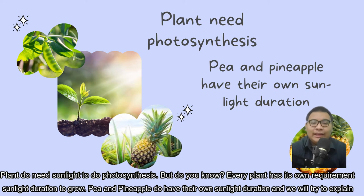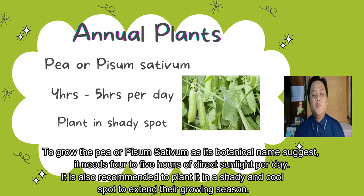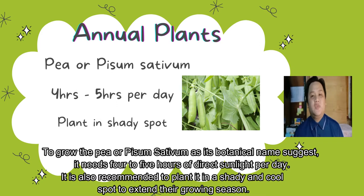Plants do need sunlight to do photosynthesis. But do you know, every plant has its own sunlight duration requirement to grow. Pea and pineapple do have their own sunlight duration and we will try to explain. To grow peas, or Pisum sativum as the botanical name suggests, it needs four to five hours of direct sunlight per day. It is also recommended to plant it in a cool or shady spot to extend the growing season.